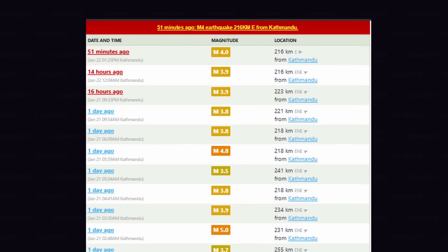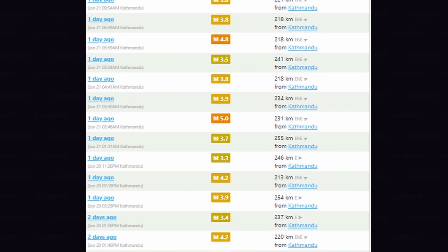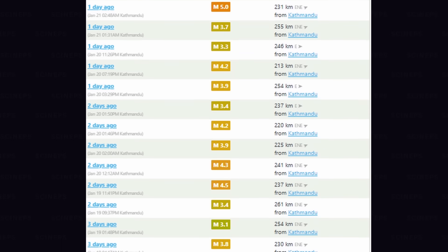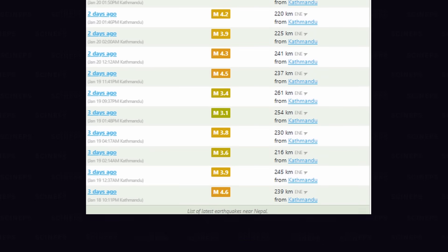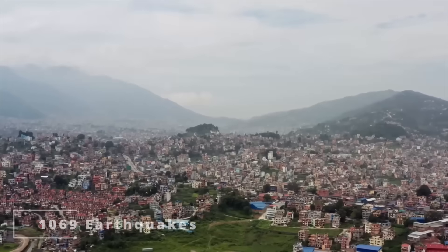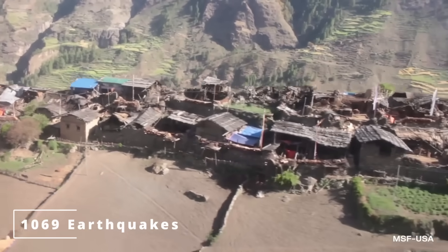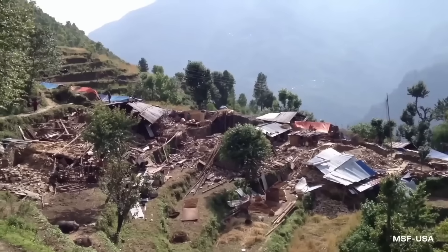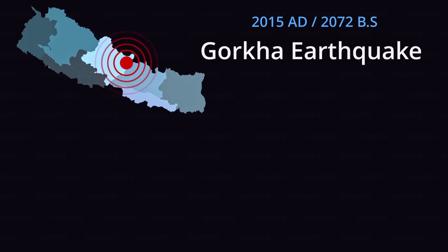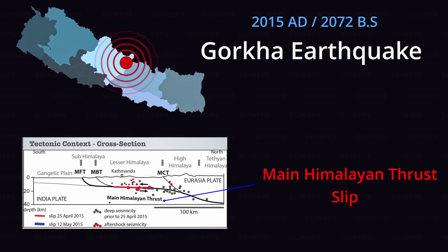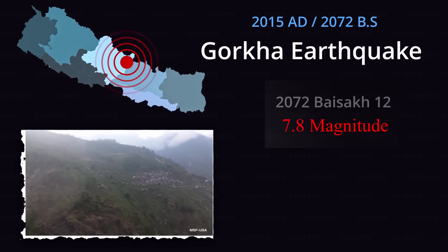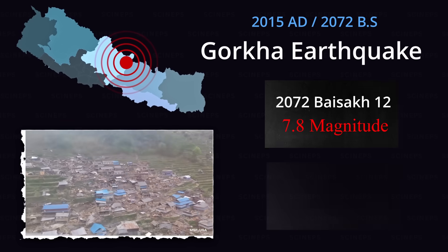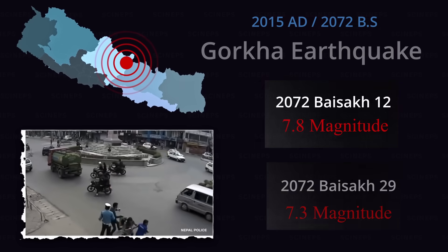The point was that Nepal is an extremely seismically active country. This is a list of earthquakes in Nepal within a 300 km radius in the last 7 to 10 days. Compared to Japan, Nepal has experienced far more seismic events. The Main Himalayan Thrust (MHT) caused a 7.8 magnitude earthquake 12 years ago and a 7.3 magnitude earthquake 29 years ago.